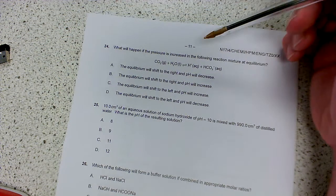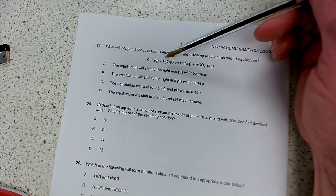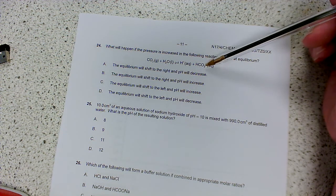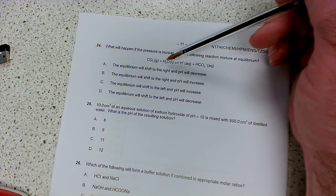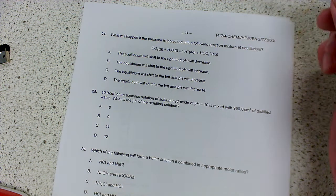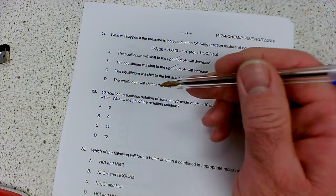What will happen if the pressure is increased in the following reaction mixture at equilibrium? So that's going to affect the gases. So we've got one molecule of gas on the left. We've got no molecules of gas on the right. So increasing the pressure will shift it to the side with fewer molecules of gas, which is the right, because there are no molecules of gas on that side. So the equilibrium will shift to the right. So it's not either of these two.